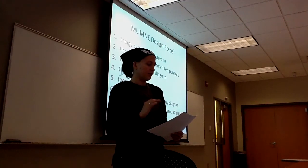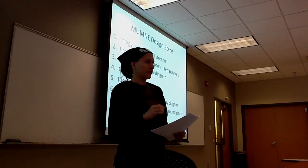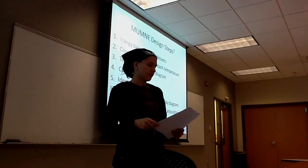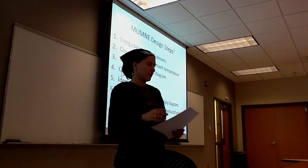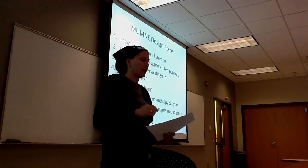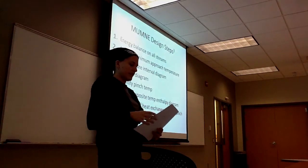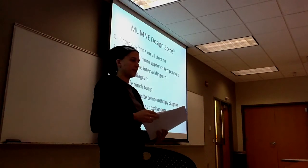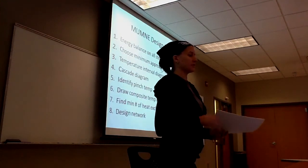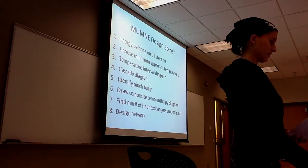Then you have to do number three: draw each stream, label it, calculate the heat flow at each interval. Number four, take the energy excess or deficit and calculate it for each interval on the temperature interval diagram. The cascade diagram shows you the minimum hot and cold utility requirements. Number six is a temperature and enthalpy diagram for the entire process. Number seven is finding the minimum number of heat exchangers that you need above and below the pinch. And finally, you get to design the whole network of heat exchangers.